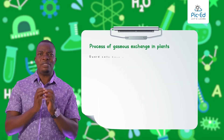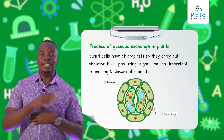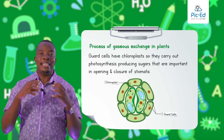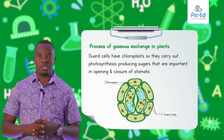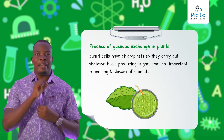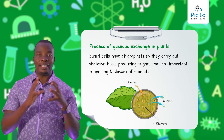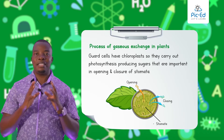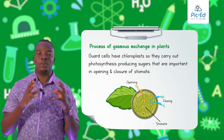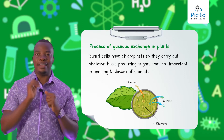The guard cells do have chloroplasts. These chloroplasts trap sunlight energy, carry out photosynthesis, and make sugars. These sugars available within the guard cells are very important in the control of the opening and closing of the stomata. Stomata are always numerous, especially in the terrestrial plants, because that's where majorly the exchange of gases takes place within the cells.